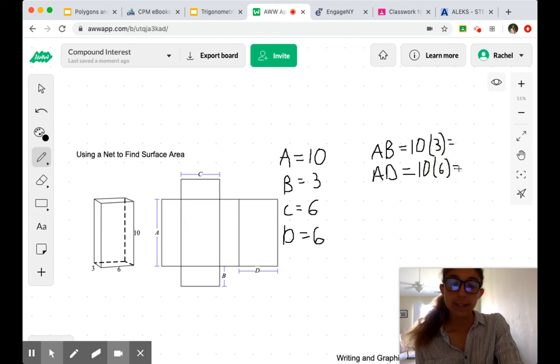Our last thing that we're looking at would be the top and the bottom of the box, which is 3 by 6, or B, D, or B, C, whichever one you choose to write.